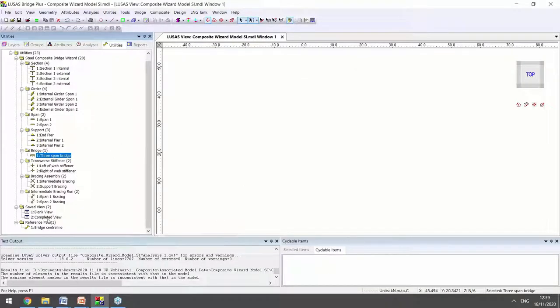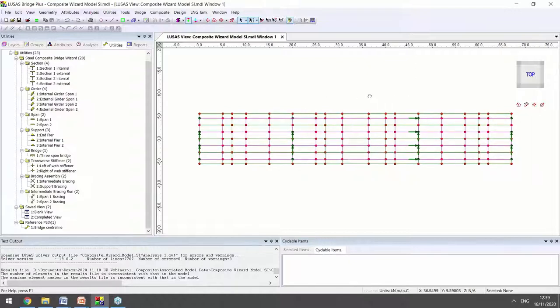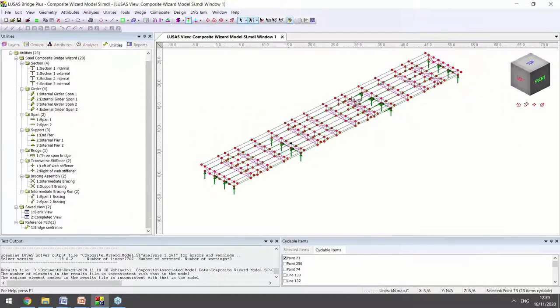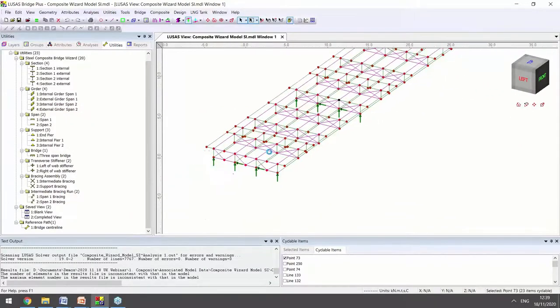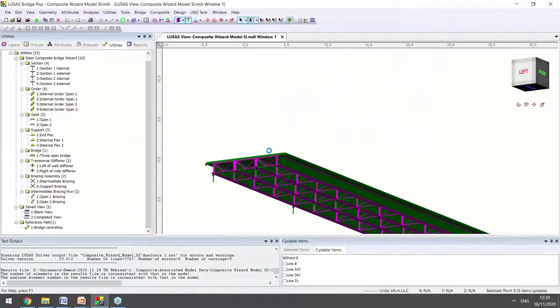LUSAS can then generate geometry for you. If I switch to the completed view of the structure, we can see here on plan the geometry that's been created. And if we rotate the structure, we can see all of the bracing between our members. And if I turn on fleshing in the model, we can see the fully rendered all three dimensions of every element.